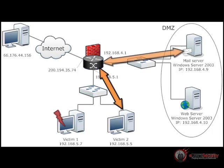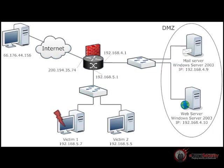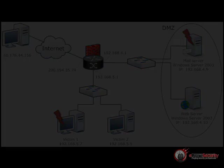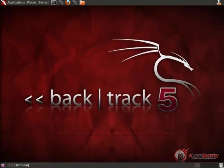We will discover that only victim 2 is able to communicate with the DMZ, so we will use the pivoting technique again on that host in order to attack the mail server from victim 2. Our route will then go from the attacker machine to victim 1, from victim 1 to victim 2, and then from victim 2 to the DMZ. This is similar to what happens in a real-world scenario. Once you learn the post-exploitation methodology, you will be able to apply it in a real-world case, no matter how many hosts you have to compromise.